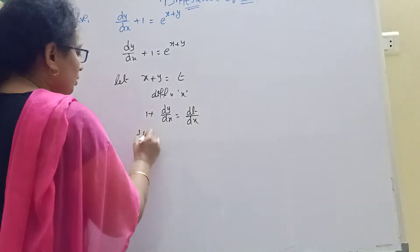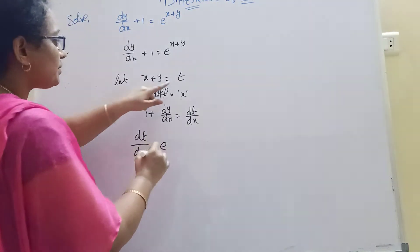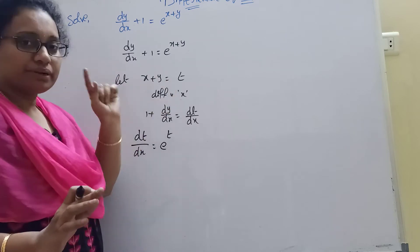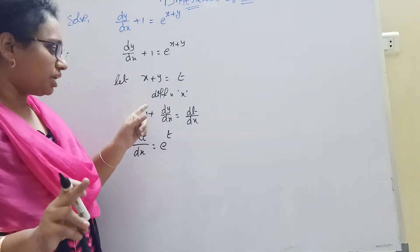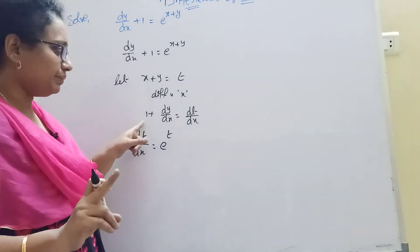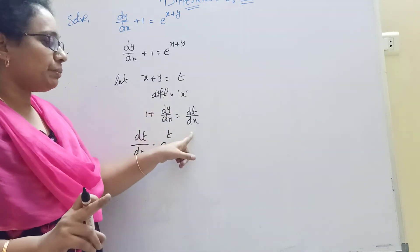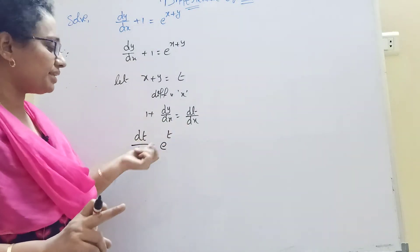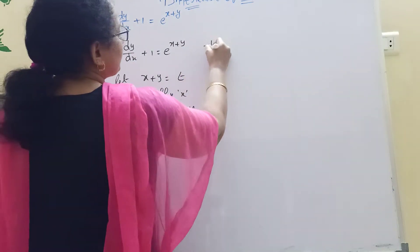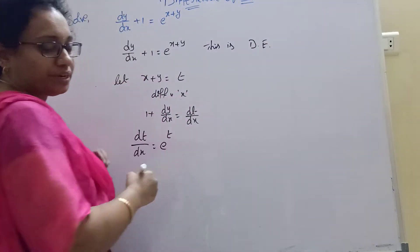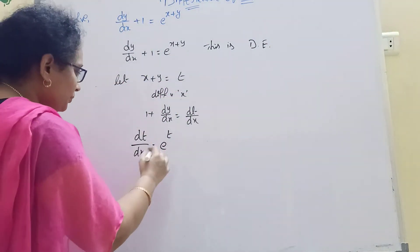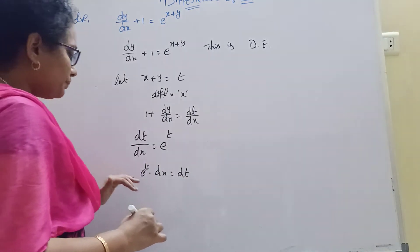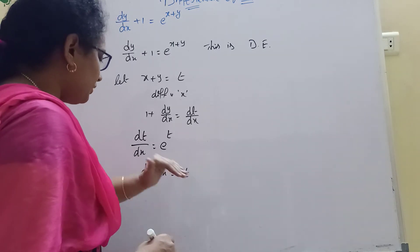Now dt/dx equals e^(x+y) which equals t. So the differential equation becomes dt/dx equal to t. Rearranging, we get e^(–t) dt equal to dx, then we separate variables and prepare to integrate.